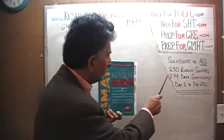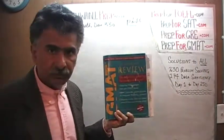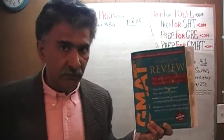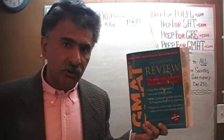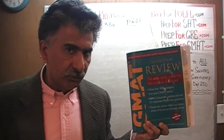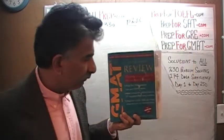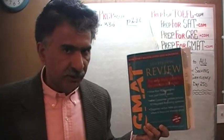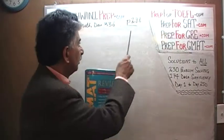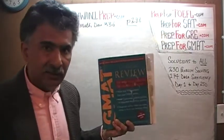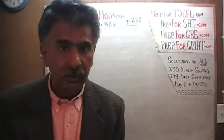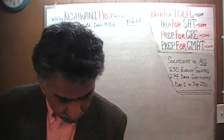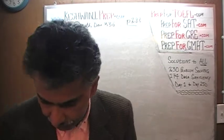The book contains 230 problem solving questions and 174 data sufficiency questions. We already solved every single math problem from this book. If you are interested in watching any of the original solutions, you will find them from day number 1 through 250. Right now we are in the process of redoing the problems and we are on page number 288. Please turn to it. Number 141.